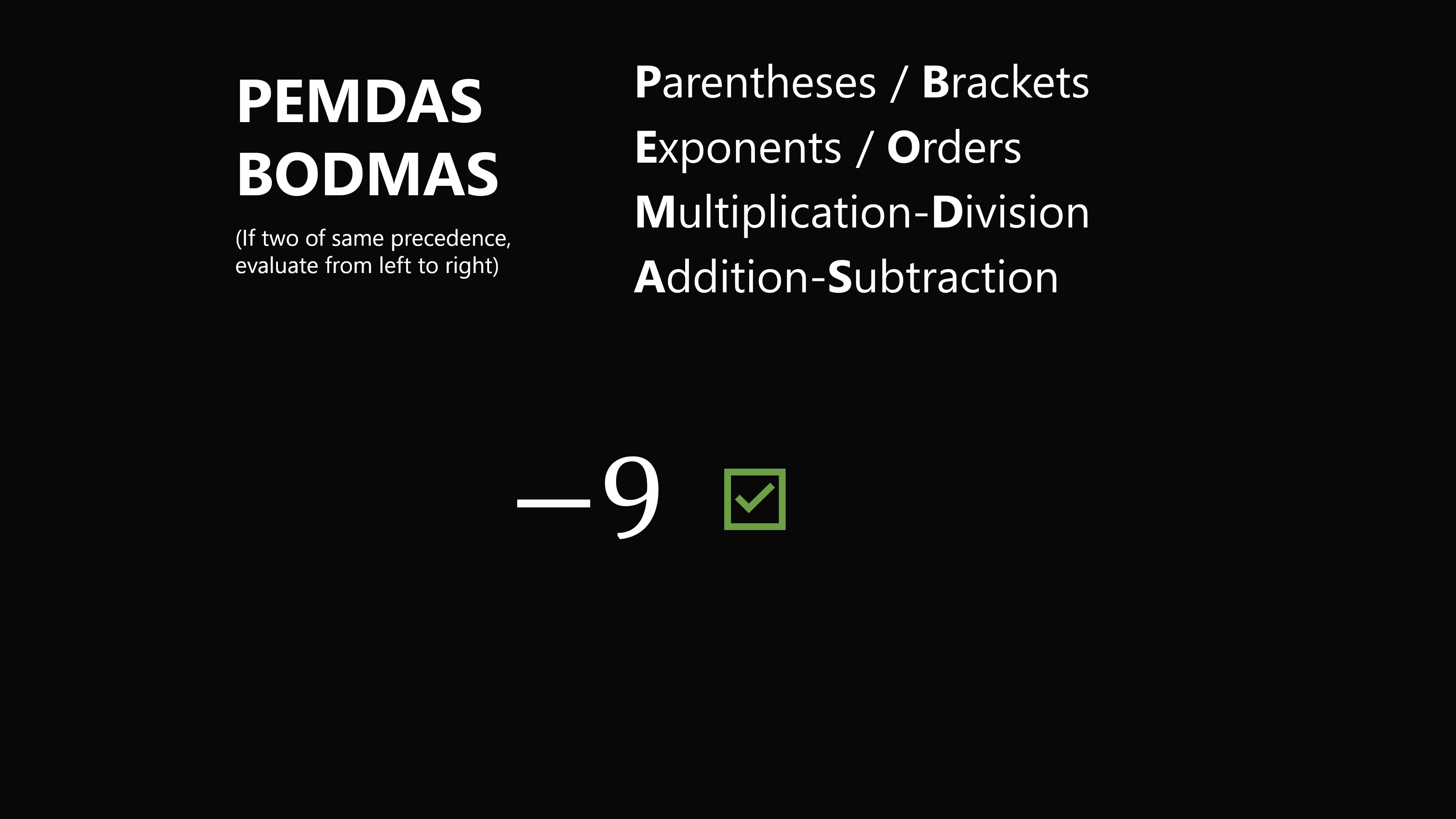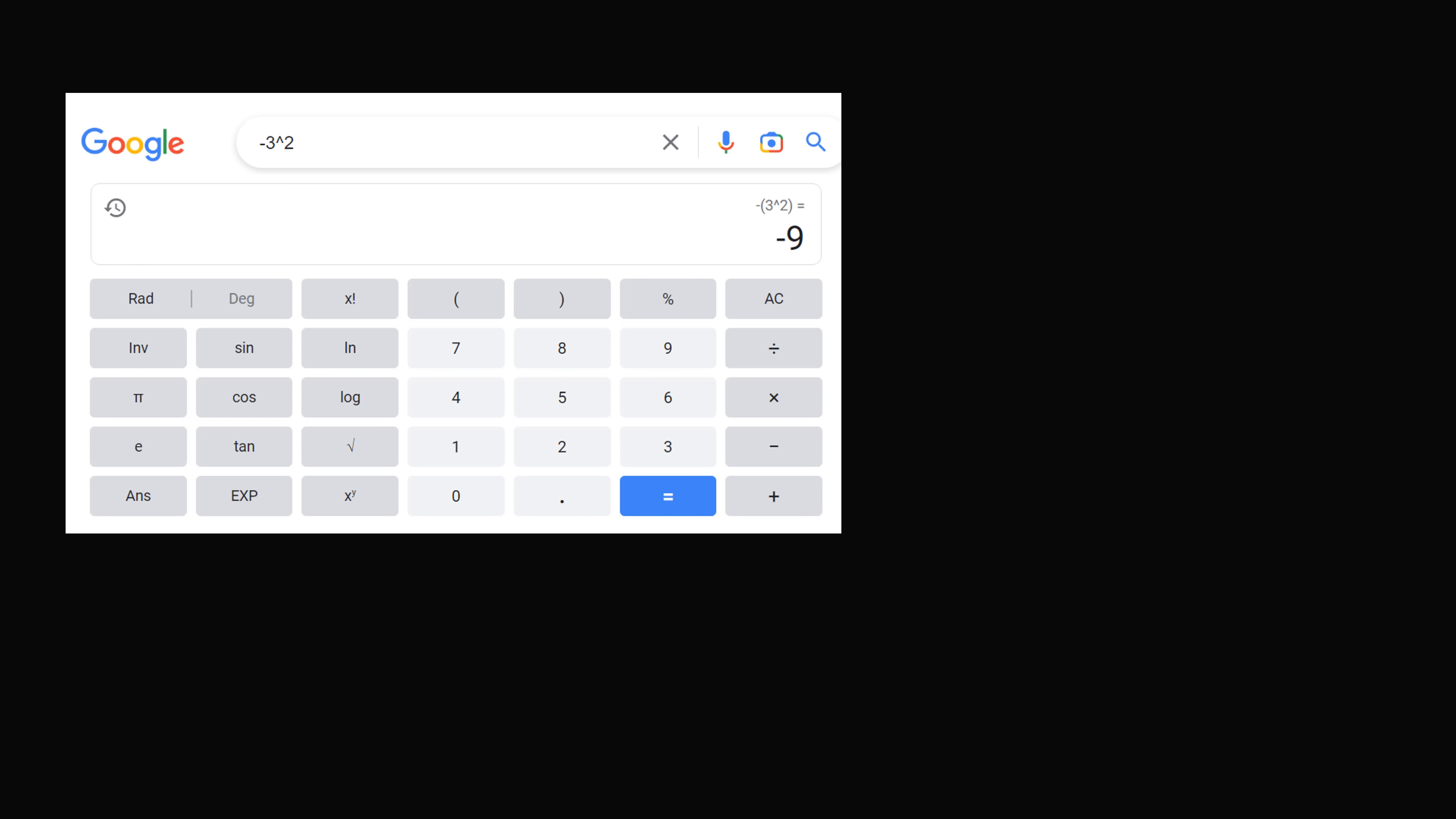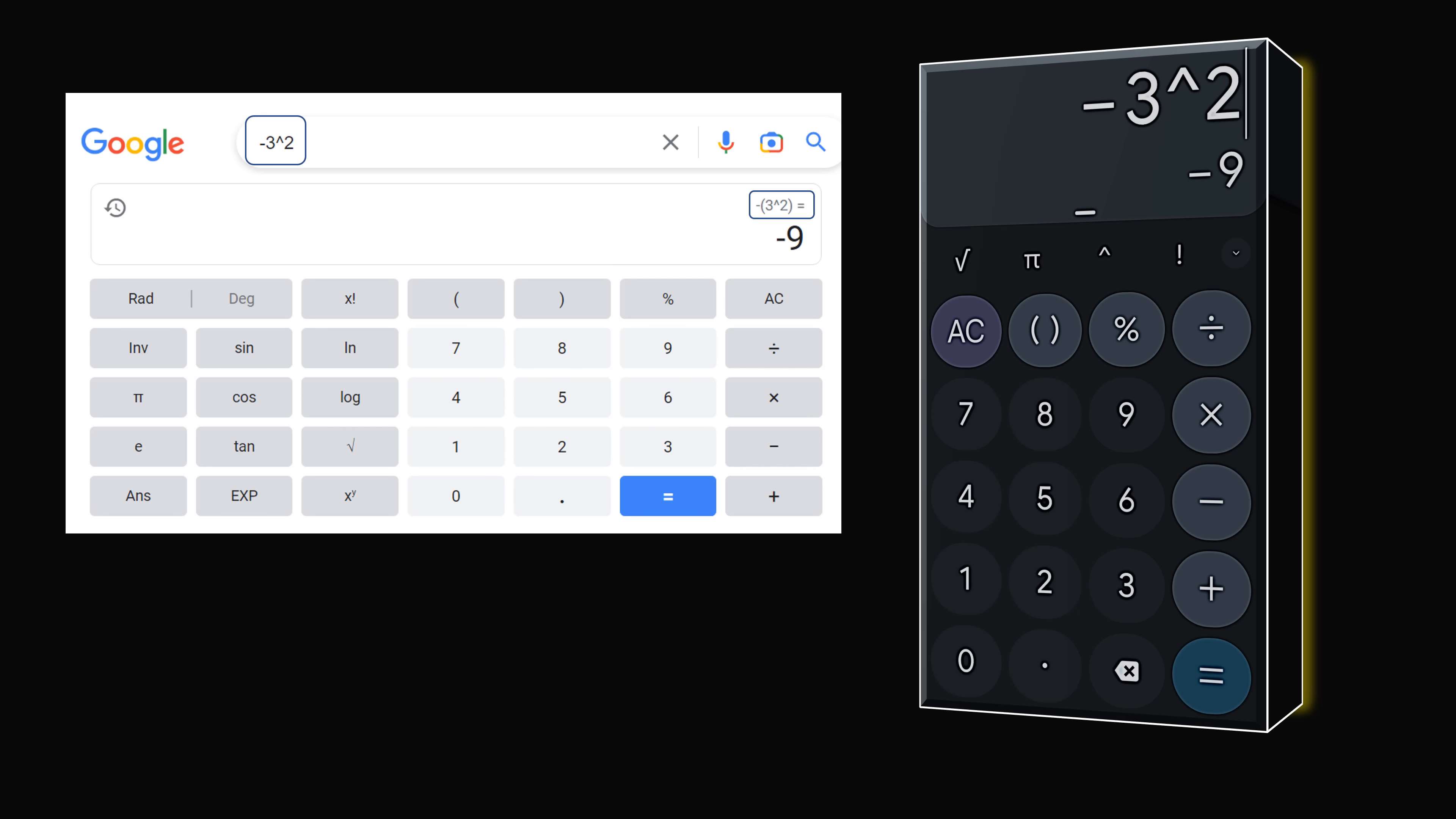Now if you wanted confirmation of this, you could input this into Google. And what I find very interesting is that Google will show you to put the parentheses with the 3 squared to evaluate that first. So this is the opposite of 3 squared, and that does give you the answer of negative 9. You could also put it into your phone calculator. The Android phone calculator does give you the answer that the opposite of 3 squared is equal to negative 9.